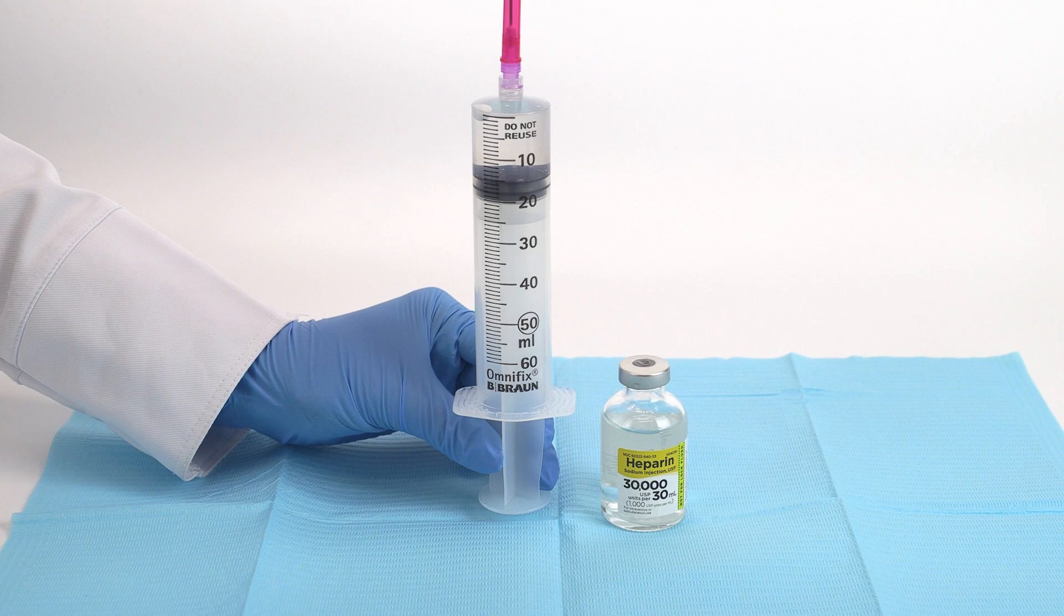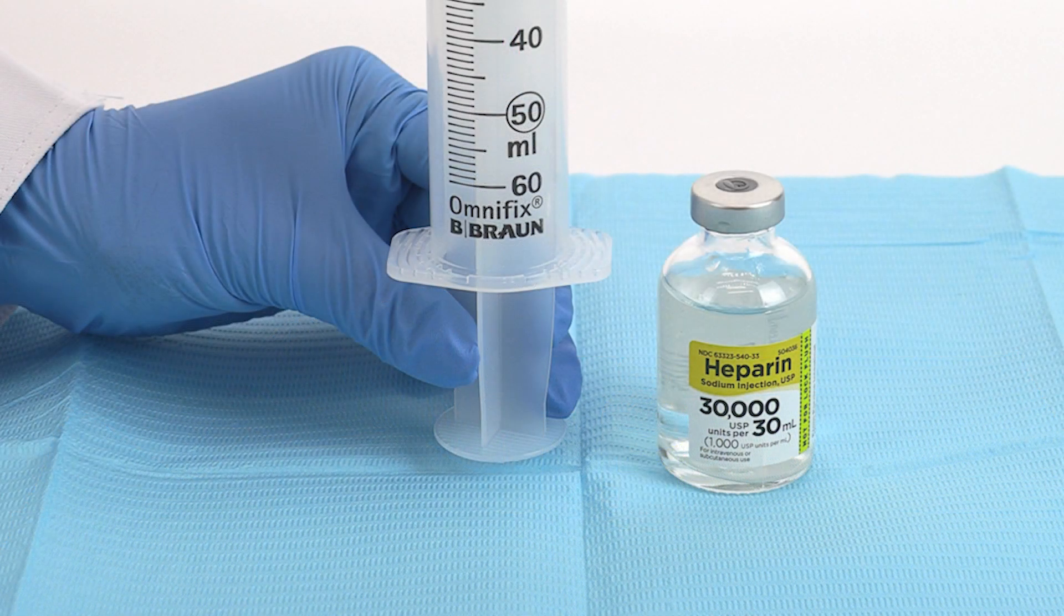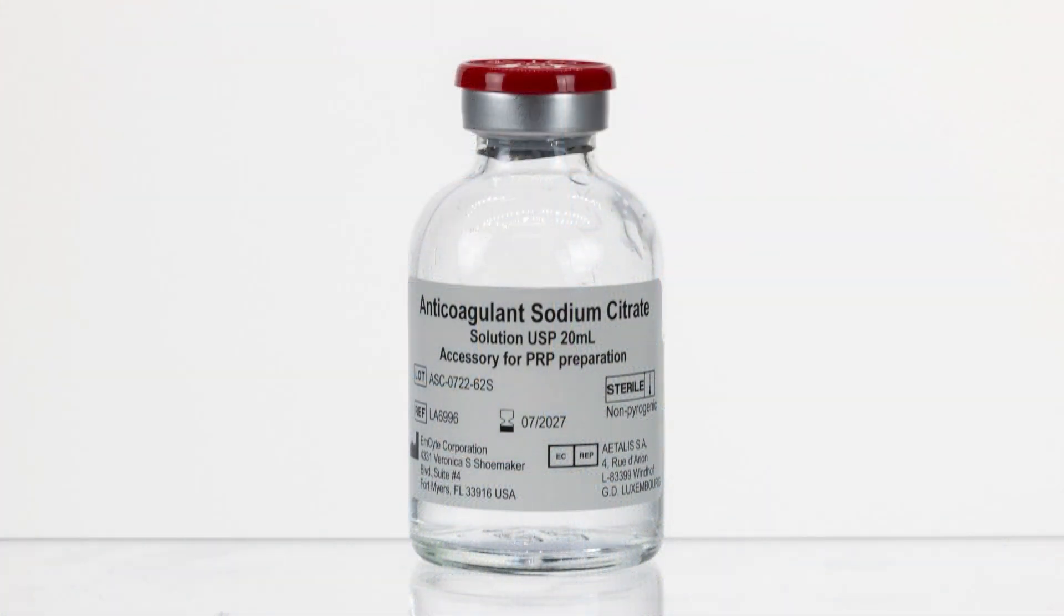First, we will begin with priming the bone marrow needle and filter. Use Heparin Solution 1000 units per milliliter as the anticoagulant of choice. You may also use citrate anticoagulant if Heparin is not available.